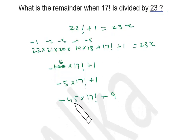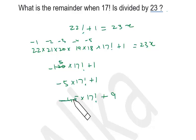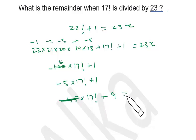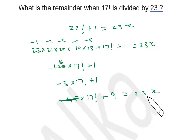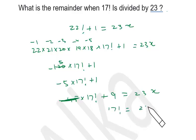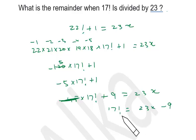Since 45 is minus 1 from a multiple of 23, minus 1 times this simplifies to precisely 1. So 17 factorial plus 9 is a multiple of 23. Therefore, 17 factorial is basically a multiple of 23 minus 9.